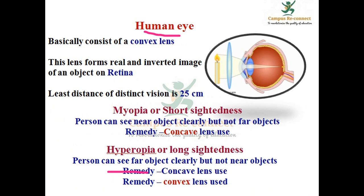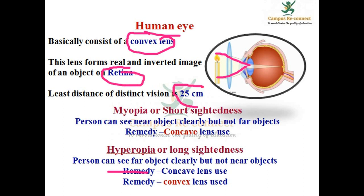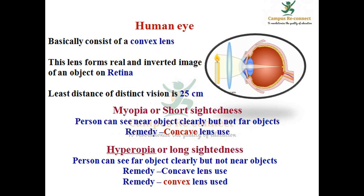Another example is the convex lens. We are discussing convex lens. The object forms an image on the retina. The least distance of distinct vision is 25 cm. This is the least distance.